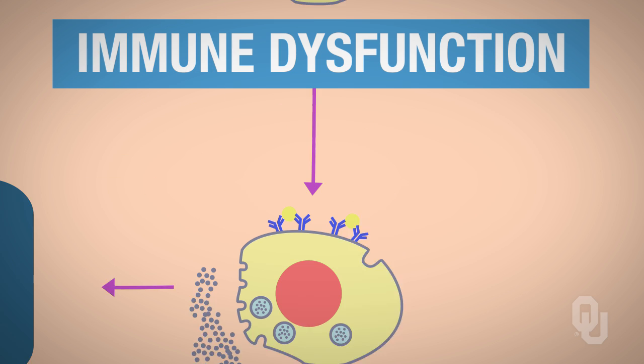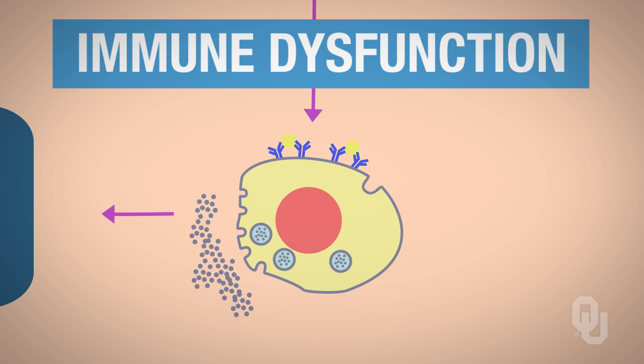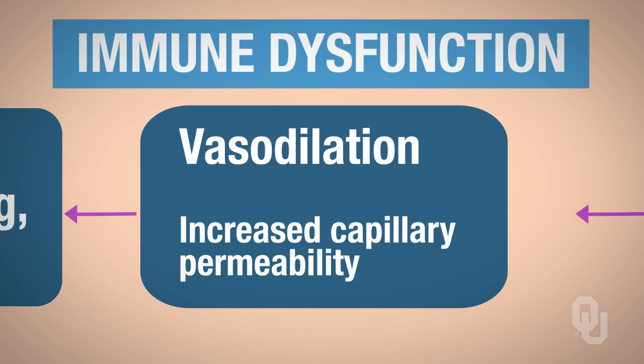So when the mast cells secrete histamine, histamine causes vasodilation and increases capillary permeability.